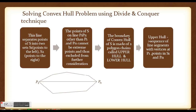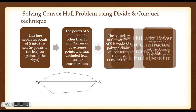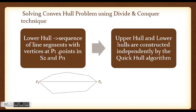Points of S that lie on the line p1-pn, other than p1 and pn themselves, cannot be extreme points and are excluded from further consideration. The boundary of the convex hull of S is made of two polygon chains called the upper hull and the lower hull. The upper hull connects p1 to pn through the points above the line, and the lower hull connects through the points below. The upper hull and lower hull are constructed independently by the Quick Hull algorithm and then concatenated to form the convex hull of the set S.